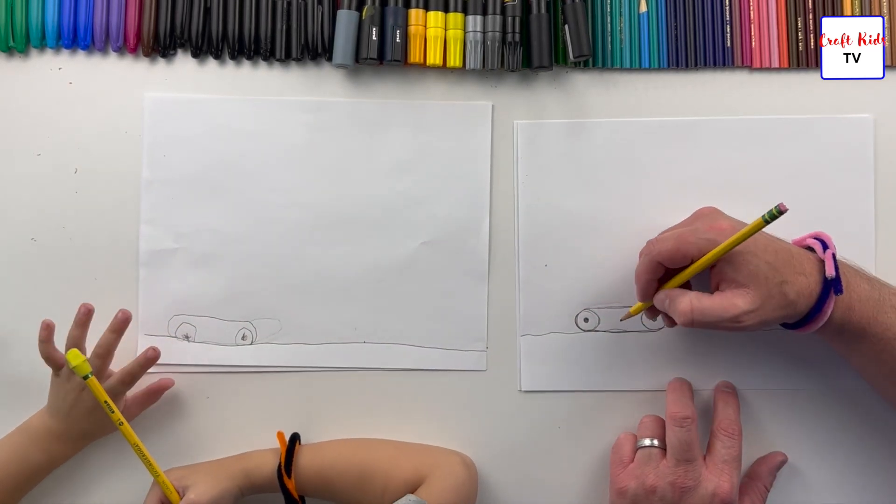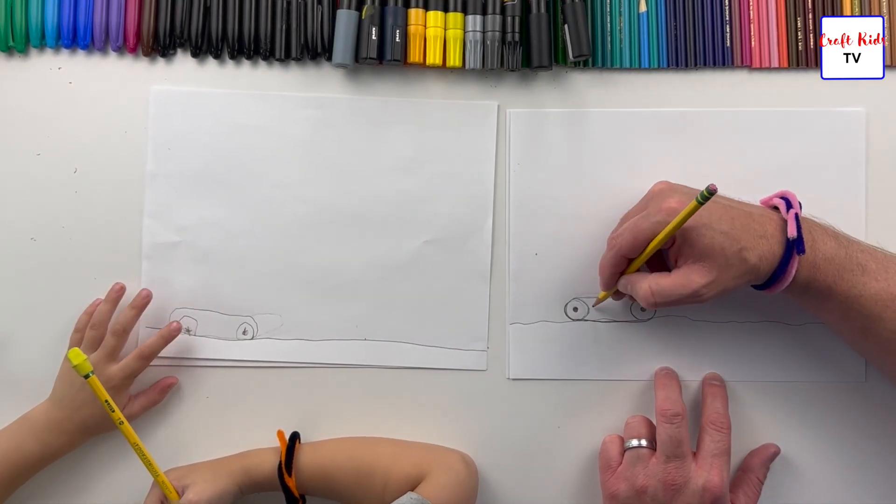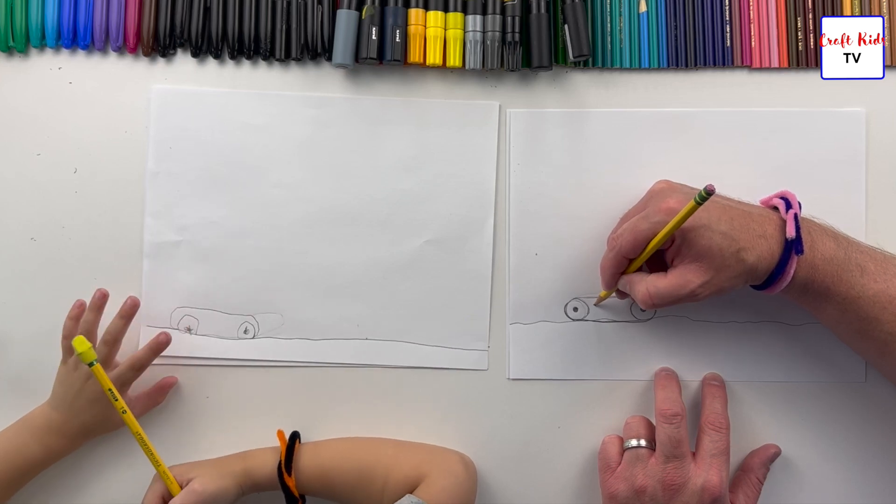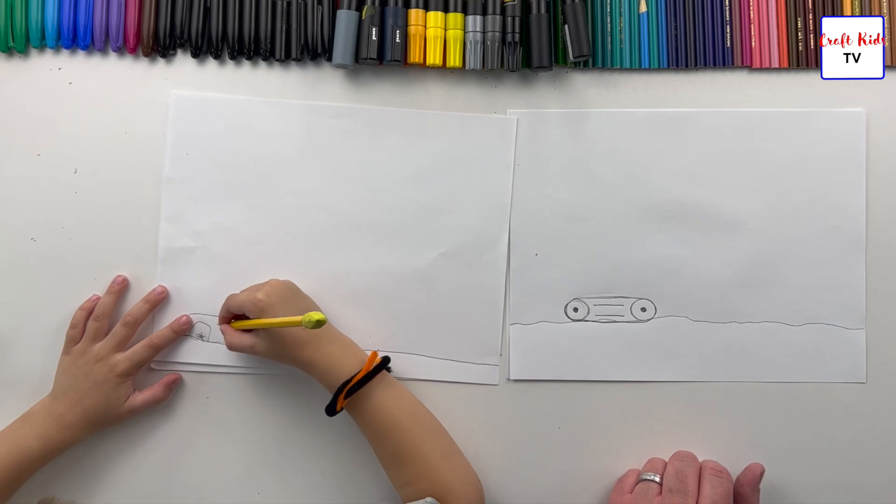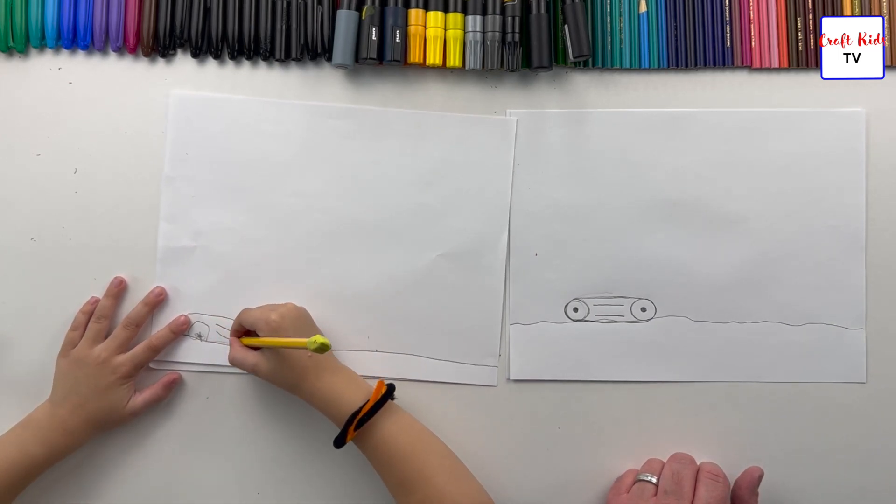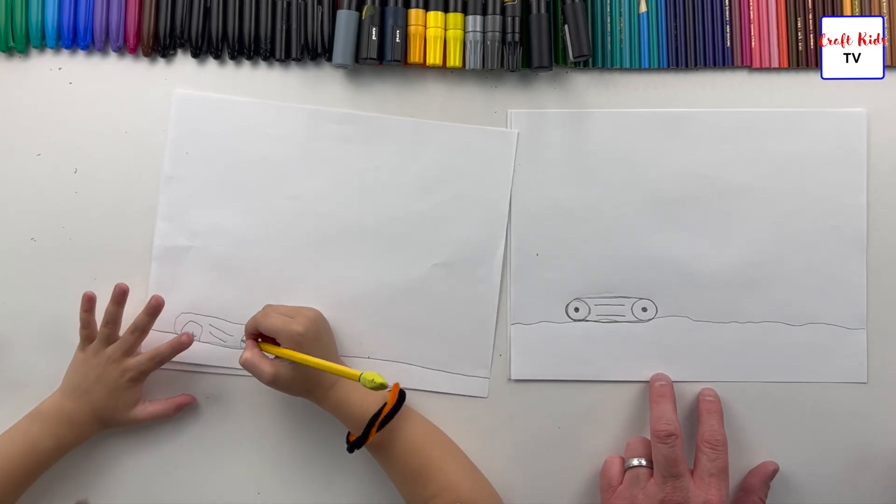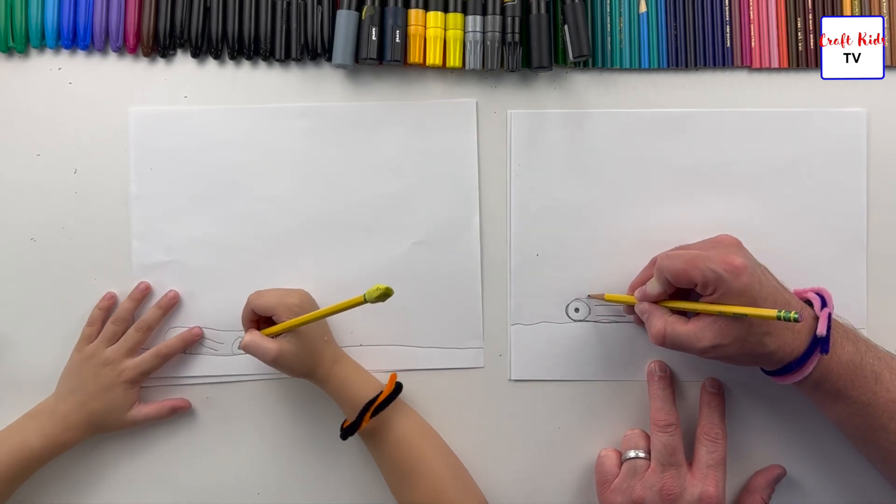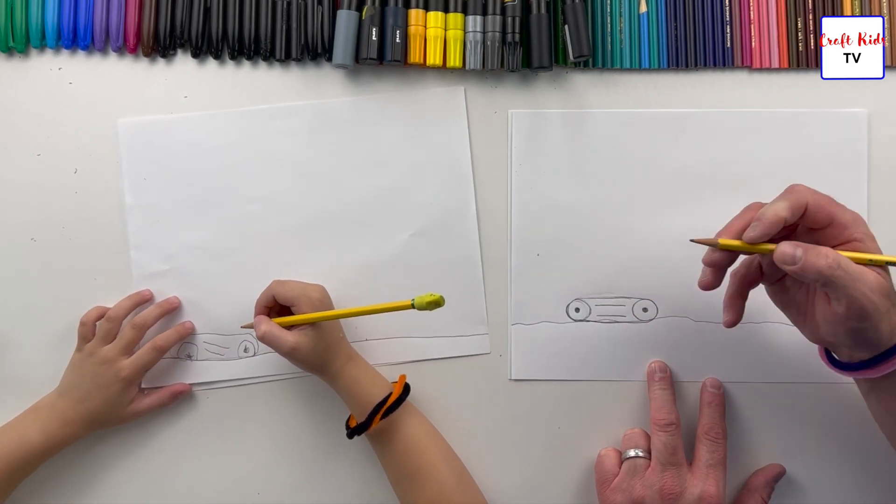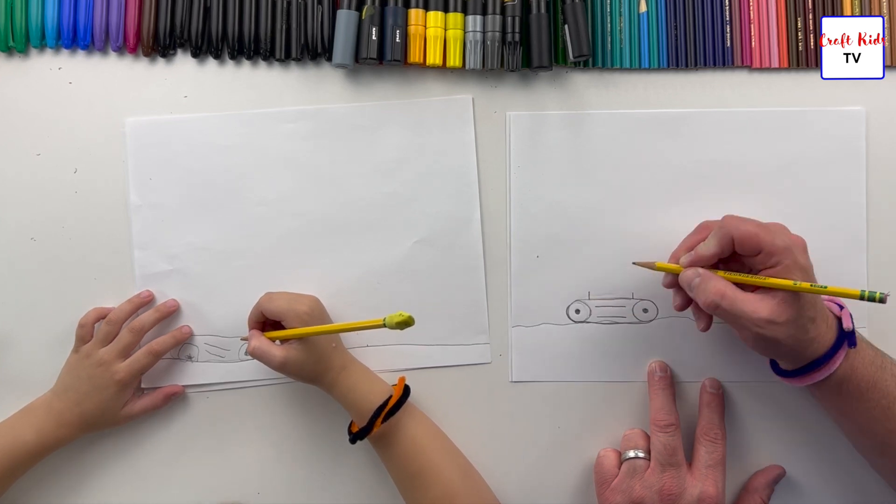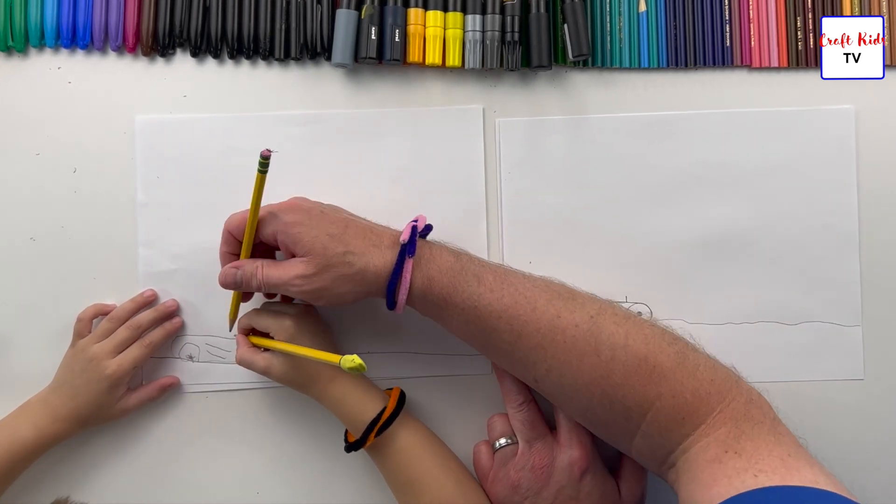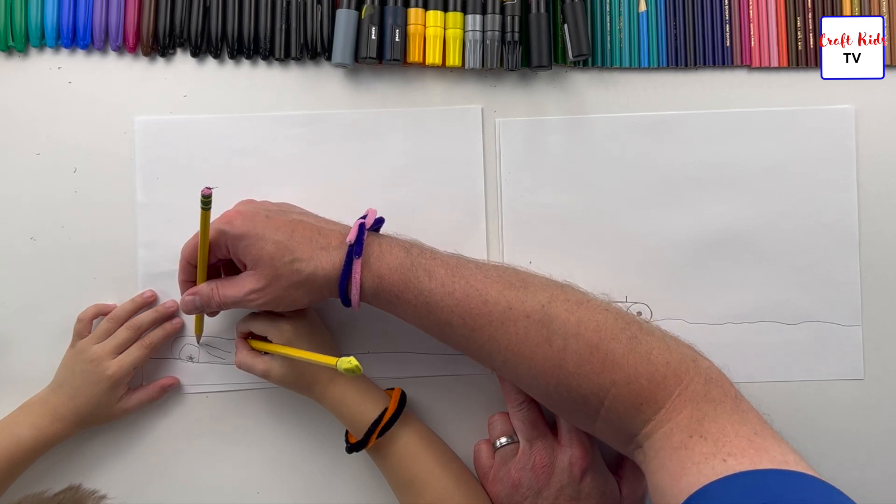Then in the middle of these tracks, we're going to just draw two lines. One, two, good. Then we're going to draw a little rectangle right here. Actually, not really a rectangle. We're going to just draw a straight line up, basically right above where the inside of the circles are.